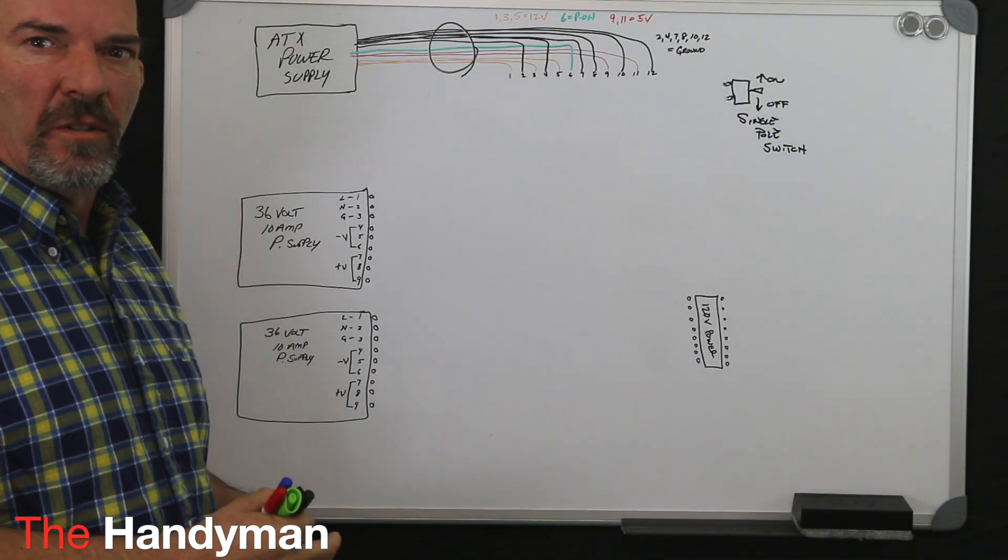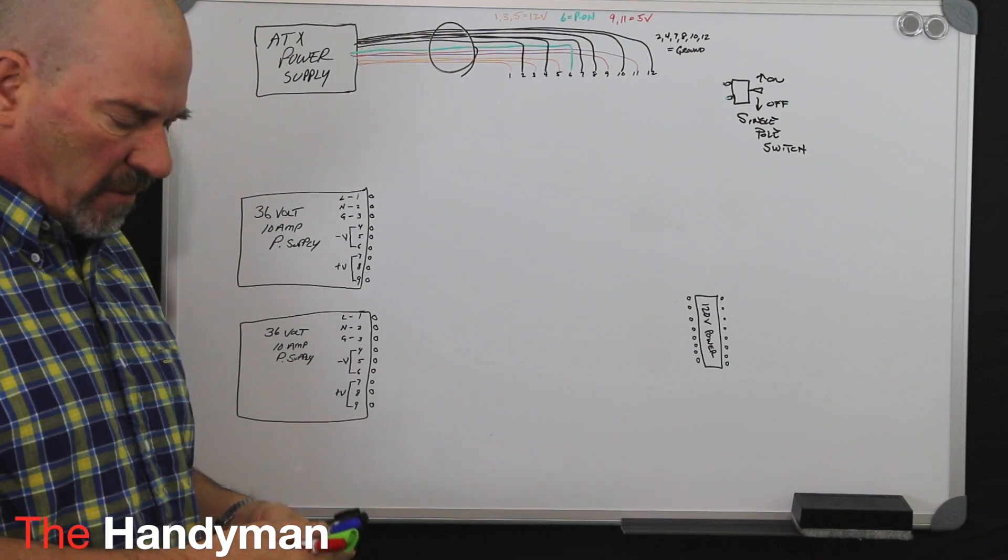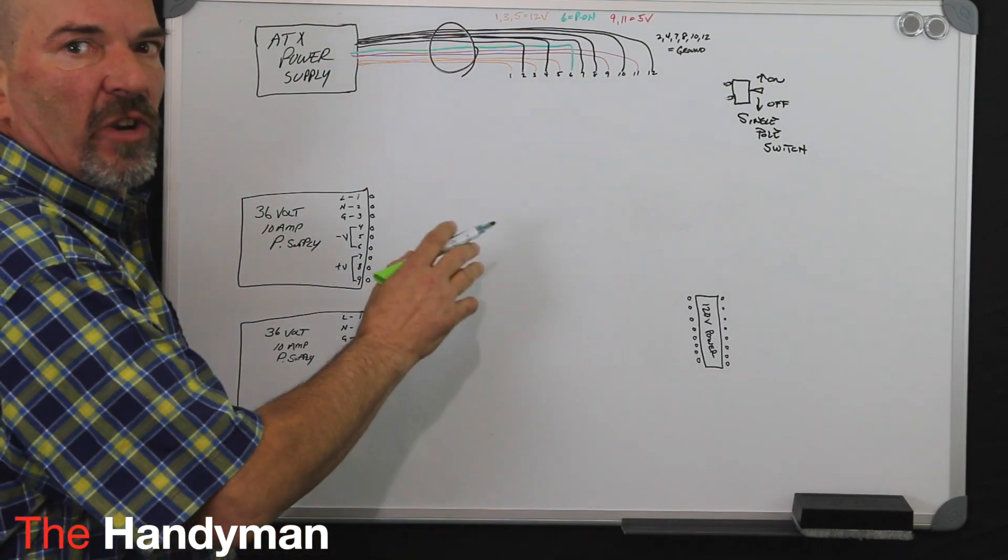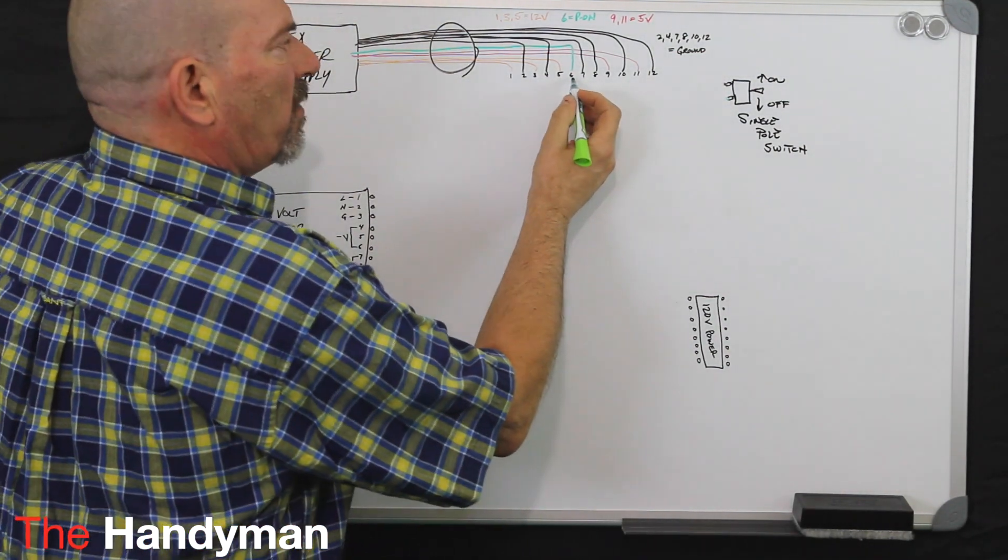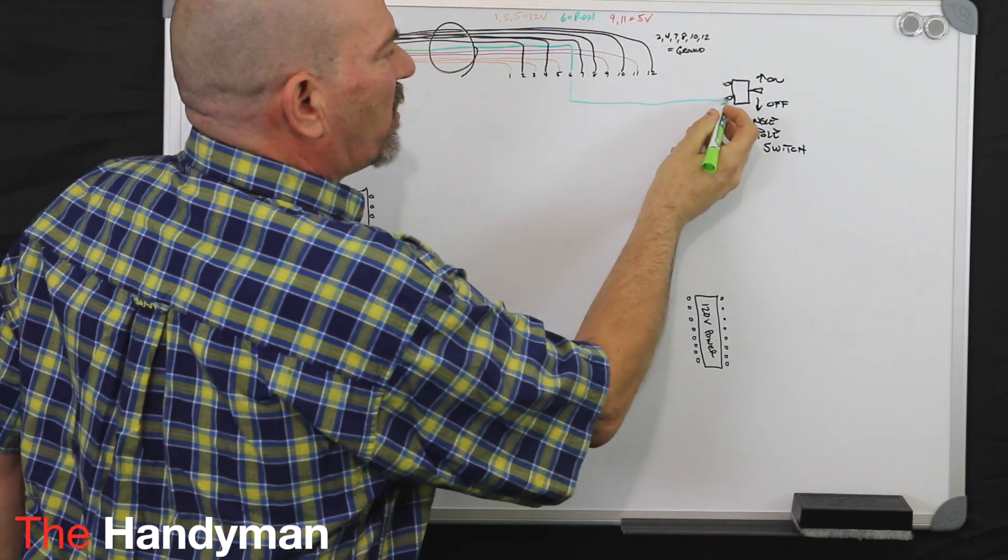Alright, to start step two, we're going to start with the easiest component, which is our power switch. So what you need to do is take your green wire off your terminal strip, which is your power on, and run that directly to one side of your switch.